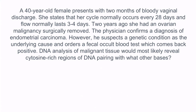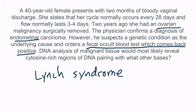Question: A 40-year-old female presents with two months of bloody vaginal discharge. Two years ago she had an ovarian malignancy surgically removed; the physician now confirms endometrial carcinoma and suspects a genetic condition. A fecal occult blood test comes back positive. DNA analysis would most likely reveal cytosine-rich regions pairing with what other bases? This triad of ovarian, endometrial, and likely colon cancer suggests Lynch syndrome — a defect in DNA mismatch repair genes. Normally cytosine pairs with guanine, but a mismatch repair defect results in cytosine abnormally pairing with adenine and thymine.